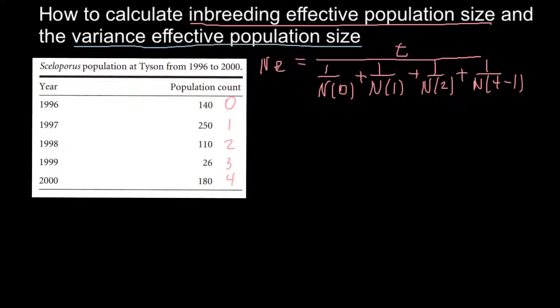We start with generation 0 or generation of founders, then we have generation 1, 2, and 3. Generation 3 here would be generation t minus 1. Let's use real numbers from our table. We have four generations, 1, 2, 3, and 4, and we put this number on top. Here we would have 1 divided by the number in generation 0 which is 140, plus 1 divided by number in generation 1.